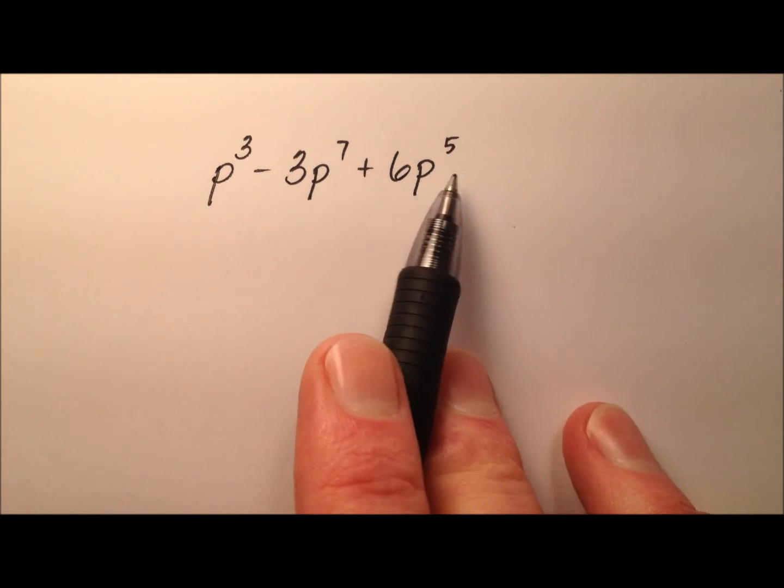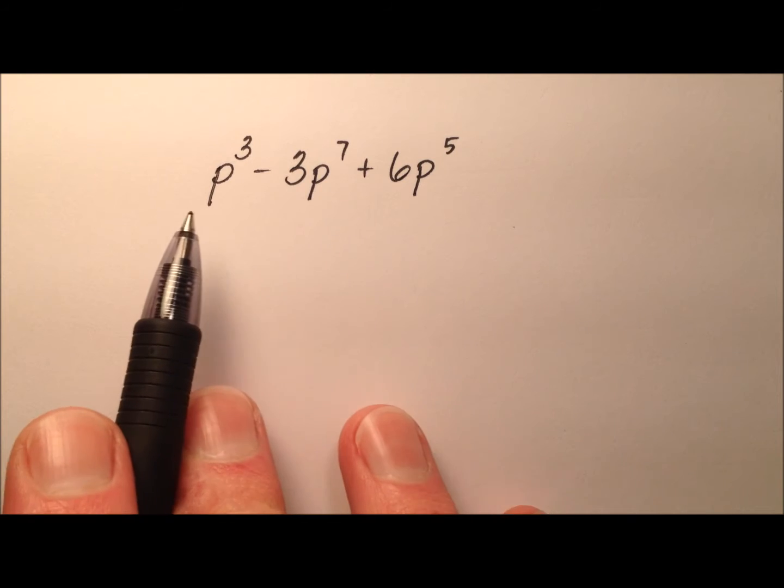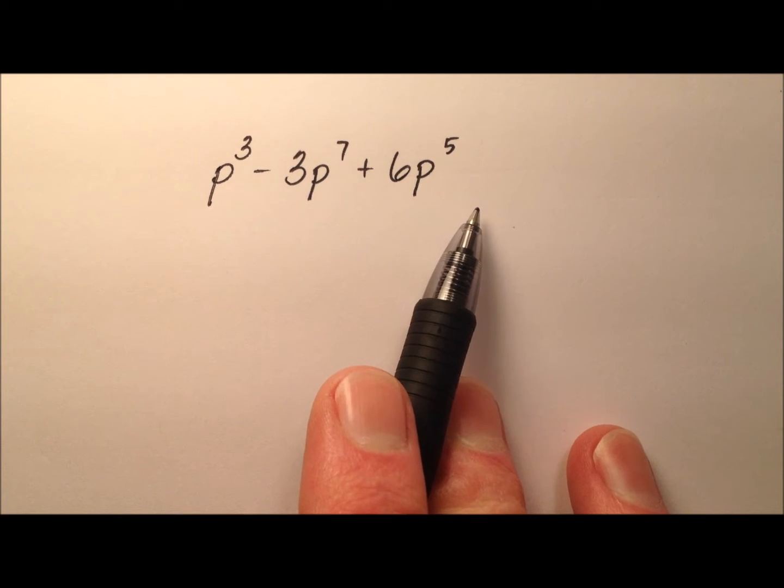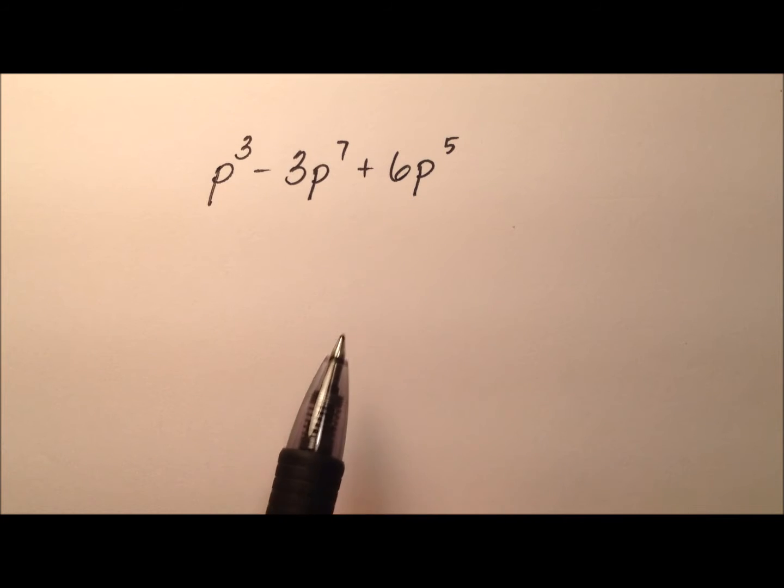In this example, we're going to look at this polynomial here. We're going to determine its classification, so what's its degree and how many terms do we have. And then if it's not already written in standard form, let's go ahead and write it in standard form.